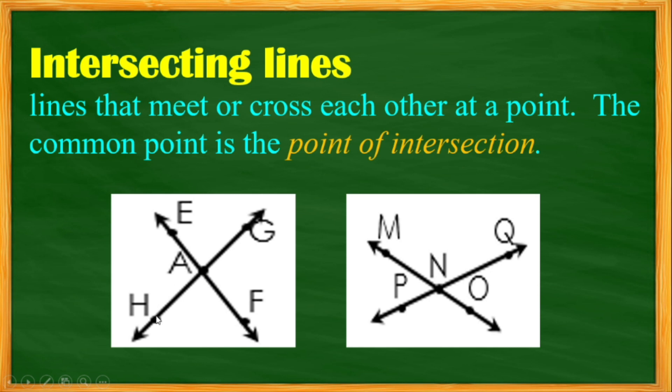Line EF and line HG have a point of intersection A. Then the other one is line MO and line PQ has a point of intersection of N.